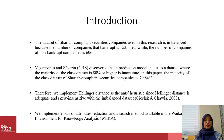Bankruptcy datasets are imbalanced because of the rarity of bankruptcy occurrence in the real economy. The dataset of Shariah-compliant security companies used in this research is imbalanced because the number of companies that are bankrupt is 153, while the number of non-bankrupt companies is 606. Pegasus and Severance in 2018 discovered that a prediction model using a dataset where the majority class is 80% or higher is inaccurate.